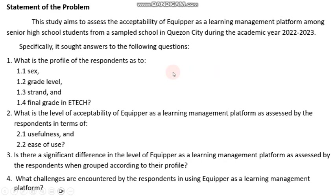Once again, we're making use of our previous example — a research that aims to assess the level of acceptability of Equiper as a learning management platform. We have four SOPs. From these four SOPs, we can determine that SOP number one, which is the profile of the respondents, has four variables that will be presented using frequency and percentage.